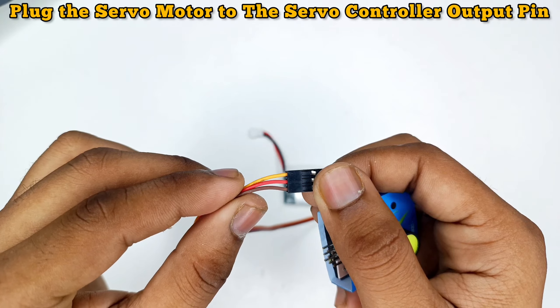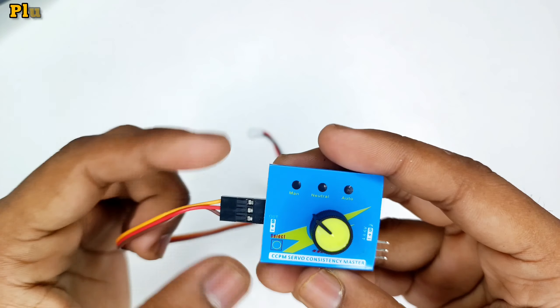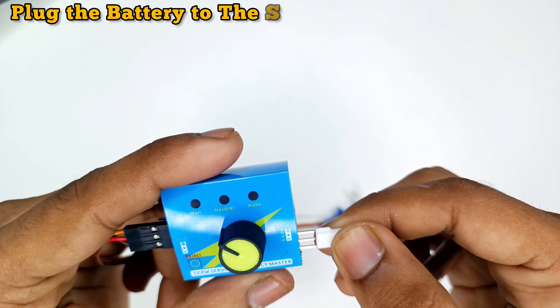Plug the servo motor to the servo controller output pin. Plug the battery to the servo controller input pin.